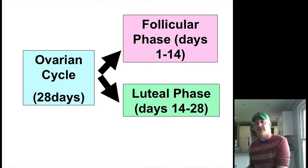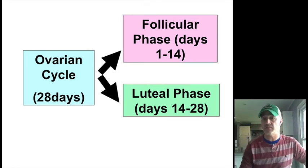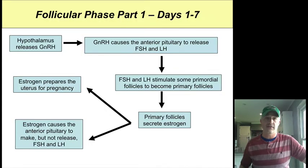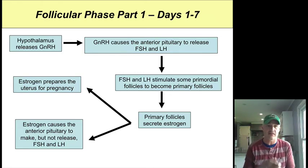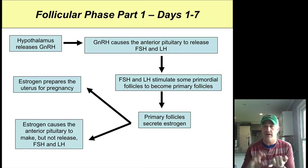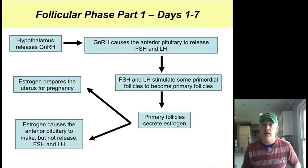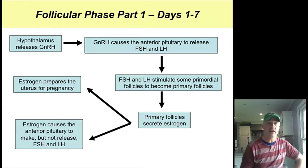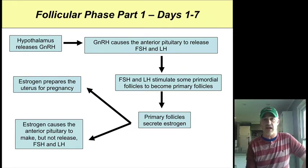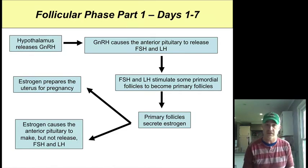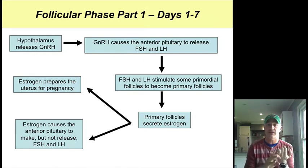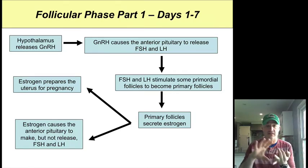The first half from day 1 to 14 is the follicular phase, ovulation takes place in the middle at about day 14, and the second half is the luteal phase. The follicular phase starts with the hypothalamus on day one releasing gonadotropin releasing hormone, which stimulates the anterior pituitary to release FSH and LH. These act on the primordial follicles to start development. As these develop, the granulosa cells make estrogen, which preps the stratum functionalis of the uterus for a possible pregnancy. Estrogen also stimulates the anterior pituitary to make more FSH and LH but not to release it.